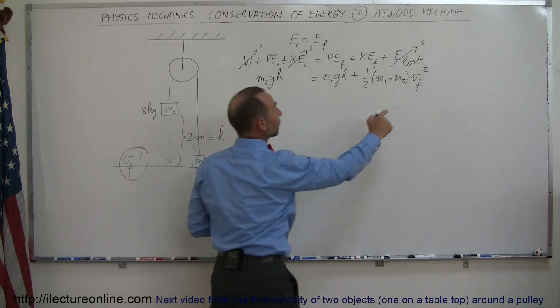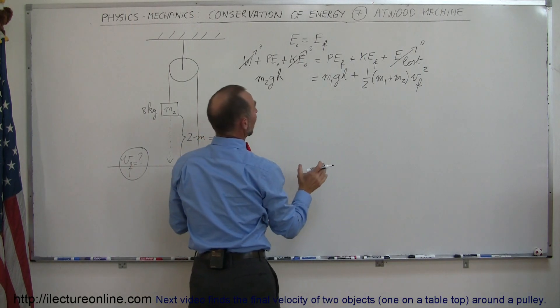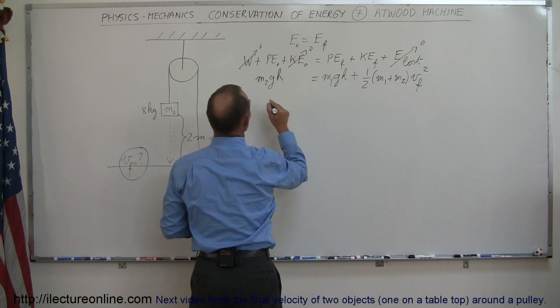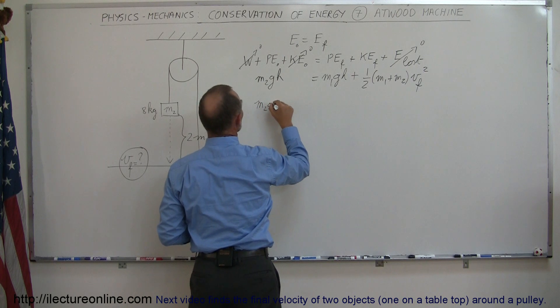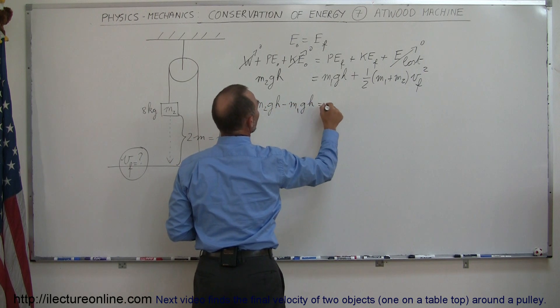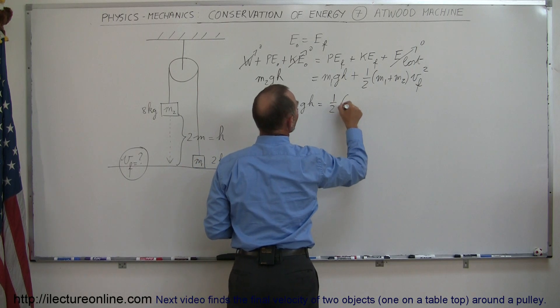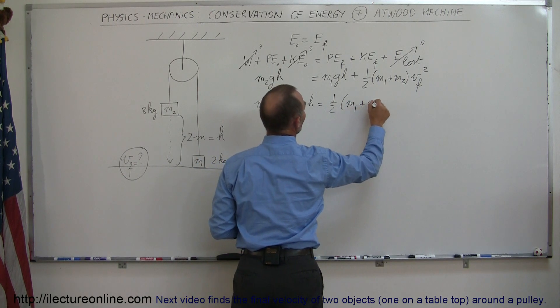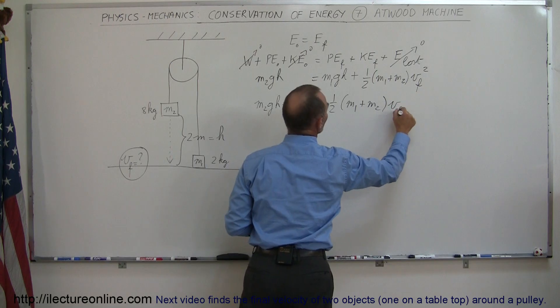That's the one we have to solve for V final. So what we have to do now is move this term over to the left side, so we have M2 times G times H minus M1 times G times H equals one half times M1 plus M2 times V final squared.